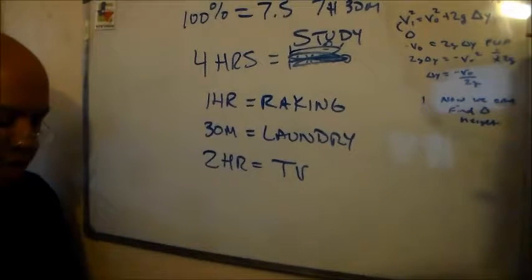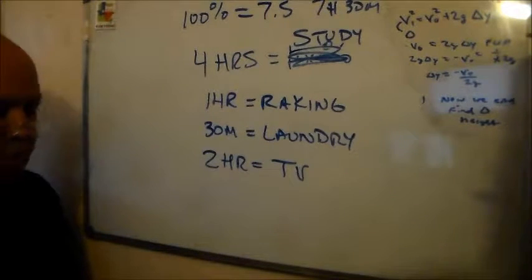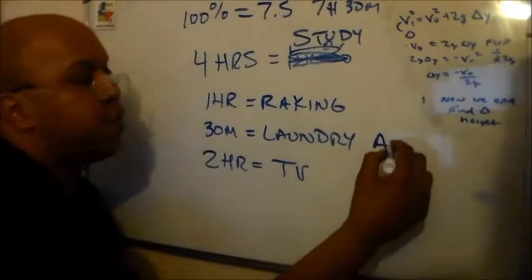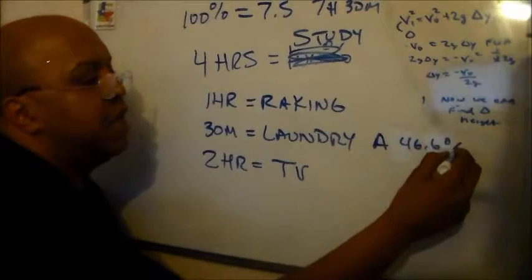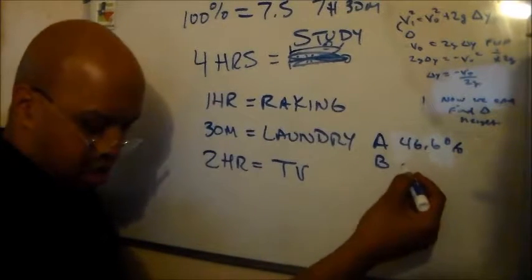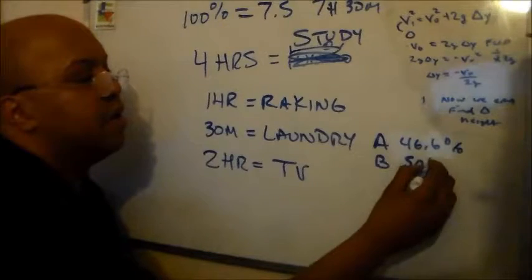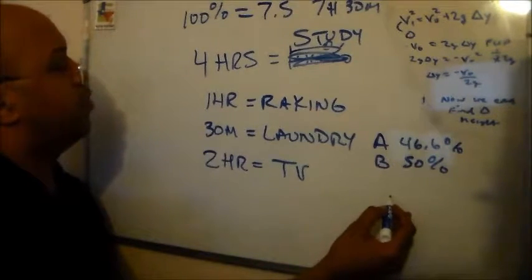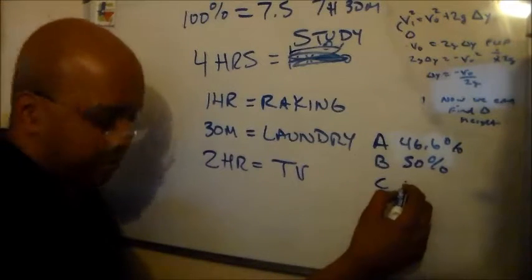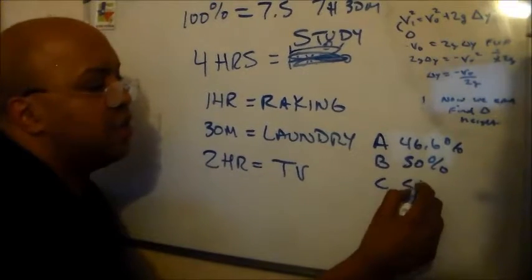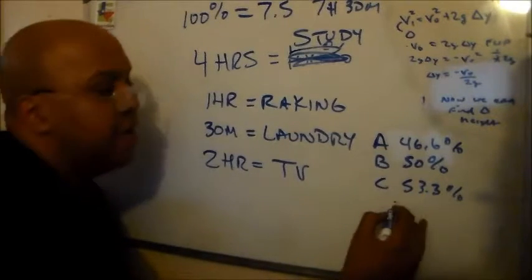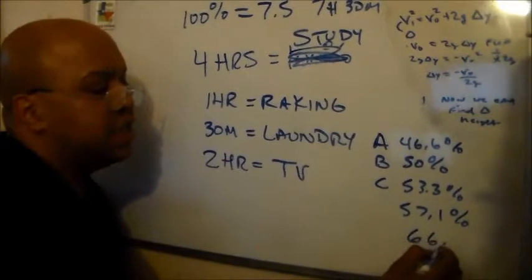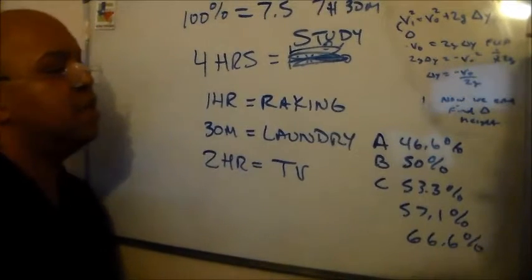Alright, so our answers are, they want to know how much time we spent studying. So our answers are 46.6%, B 50%, which we could throw that out. I think, two, one, three and a half, yeah we could throw that out. 53.3%, 57.1%, and 66.6%.